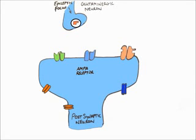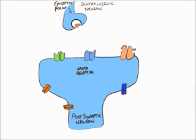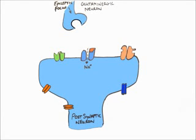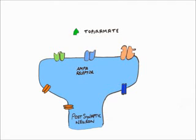Next, we look at the AMPA receptor. When an action potential leaves the epileptic focus and reaches the glutaminergic neuron, glutamate is released. As mentioned, lamotrigine stops glutamate release. In the absence of lamotrigine, glutamate binds to the glutamate site of the AMPA receptor, opening the channel. Sodium ions enter the post-synaptic neuron, causing depolarization, excitation, and spread of the epileptic action potentials, causing seizures.